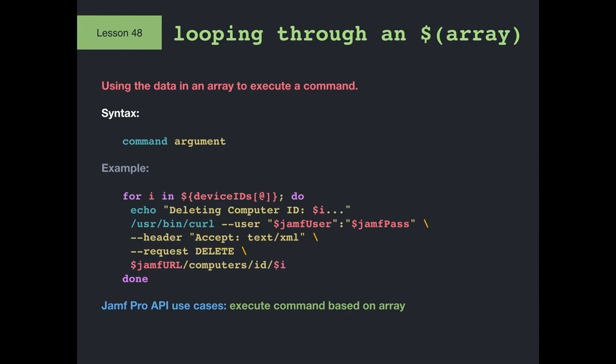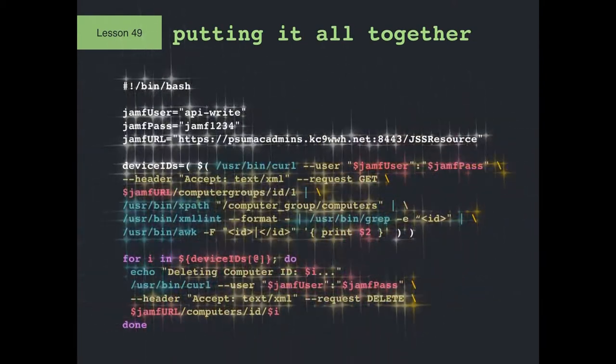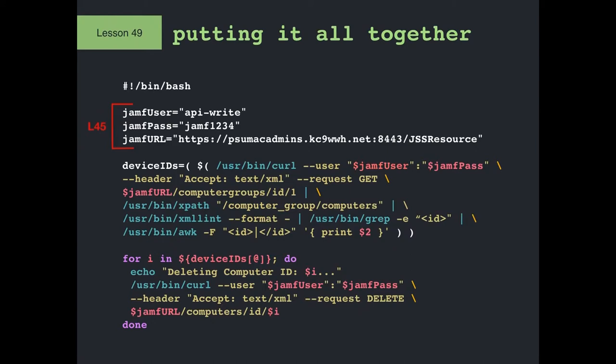At that point you have a working script — just those three sections: variables, array, loop. You can reuse this framework over and over for whatever you want. I like this one because you can create a static or smart group, put the devices you want to act on in there, and just change what you do in the loop. In this case we're deleting, but it could be a mobile device command, an inventory update, an asset tag update — whatever.